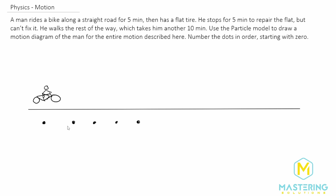Each one of these dots represents a minute, so we'll call this position zero, and here's one, two, three, and four. So here's one minute, two minutes, three minutes, four minutes, and five.